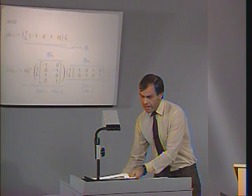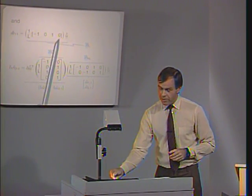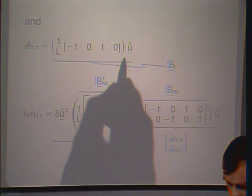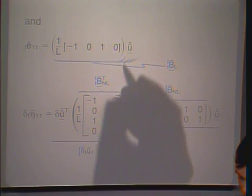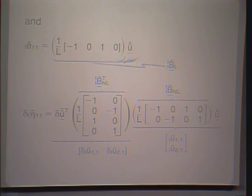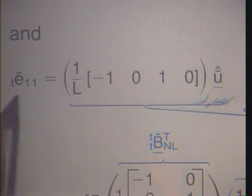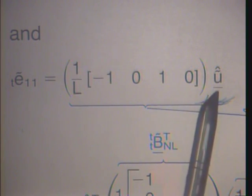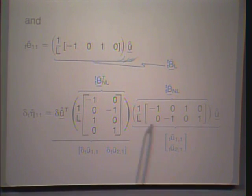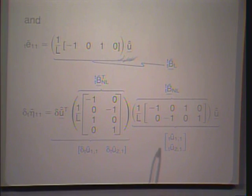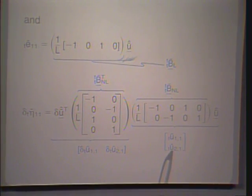Using this information, we directly extract the BL matrix, which links the linear strain increment with the nodal point displacements. There is a small error — this bracket should close earlier, because the B matrix does not contain the nodal point displacement vector; E-curl-11 equals the B matrix times the nodal point displacement vector. Similarly, we write the variation in eta-11 in matrix form, where one part captures the u-curl-1,1 term and the other captures u-curl-2,1.